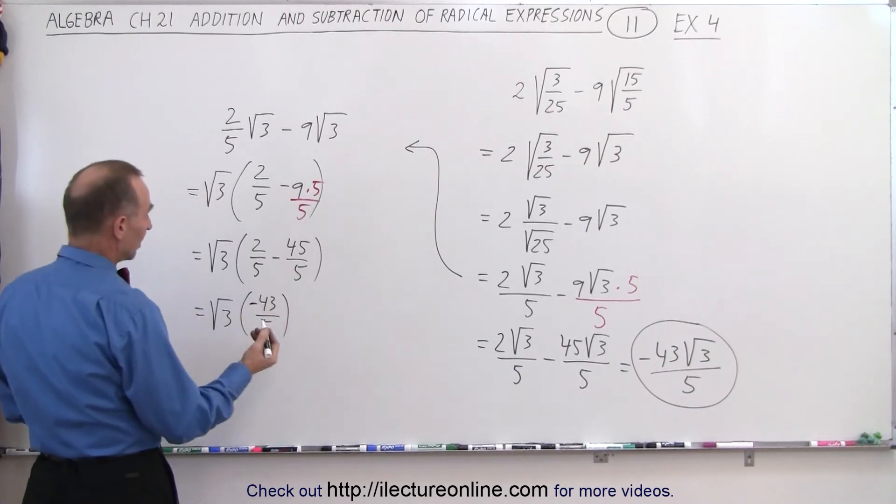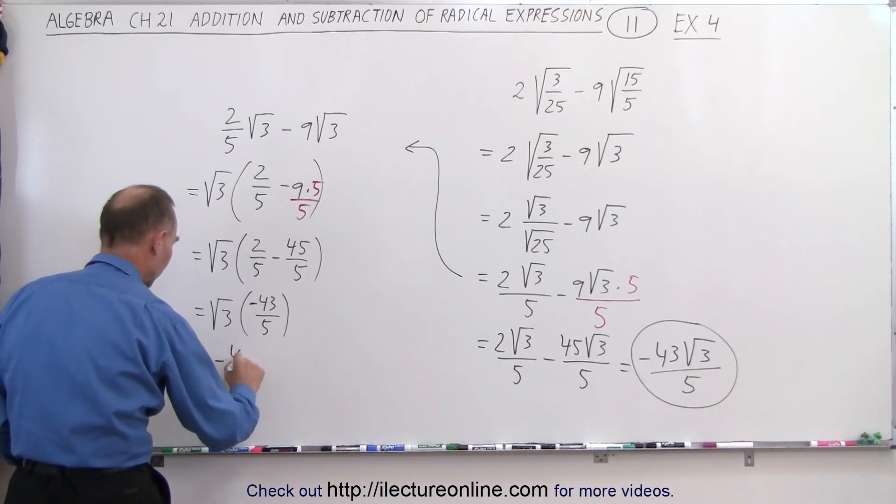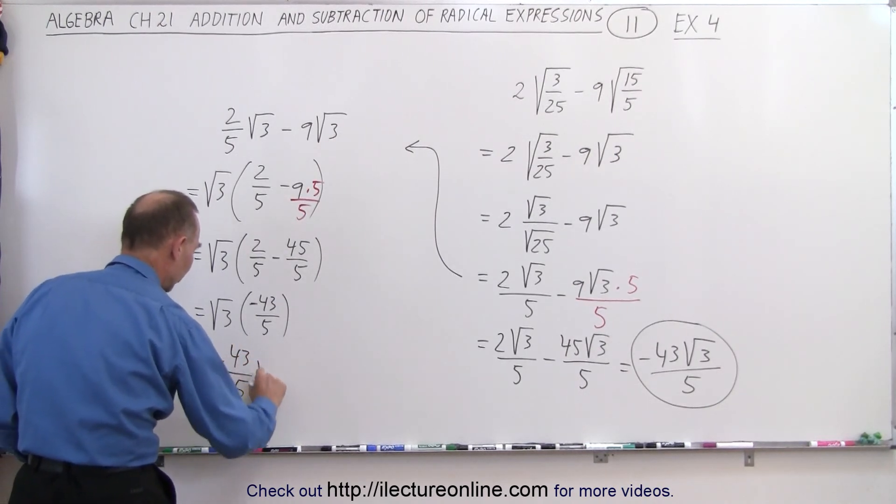And of course, that's a minus. Then you could write it as -43/5 times √5.